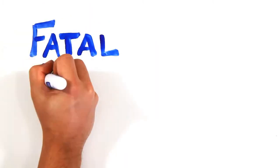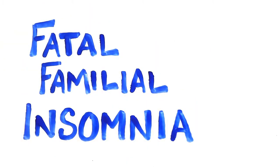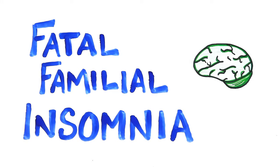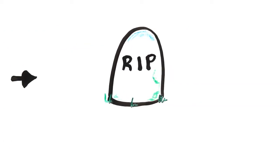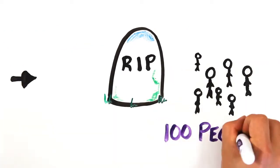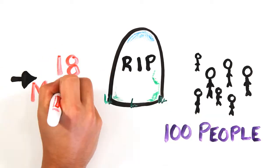Perhaps we should look at fatal familial insomnia for an answer, a rare genetic disease of the brain which causes progressively worsening insomnia or sleeplessness, leading to hallucinations, dementia, and ultimately death. This disease has only affected around 100 people in the world, but their average survival span was around 18 months.